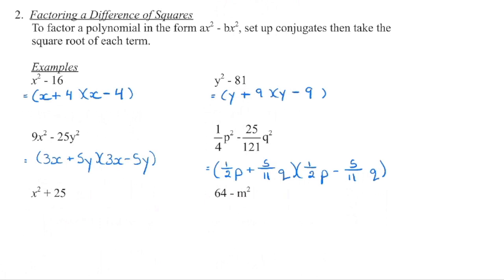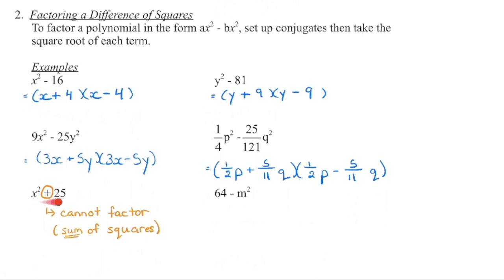In the next one, we do not have a difference of squares — you have to pay attention. There is no greatest common factor, but because of that plus sign, this is a sum of squares. If we were to set up our conjugates, we won't end up with that positive term. So this particular polynomial doesn't factor — this would be a prime polynomial.